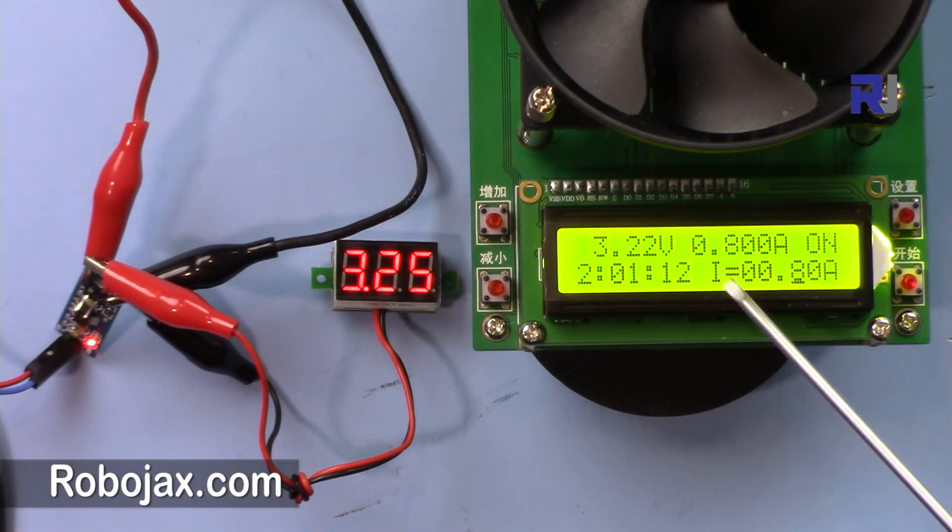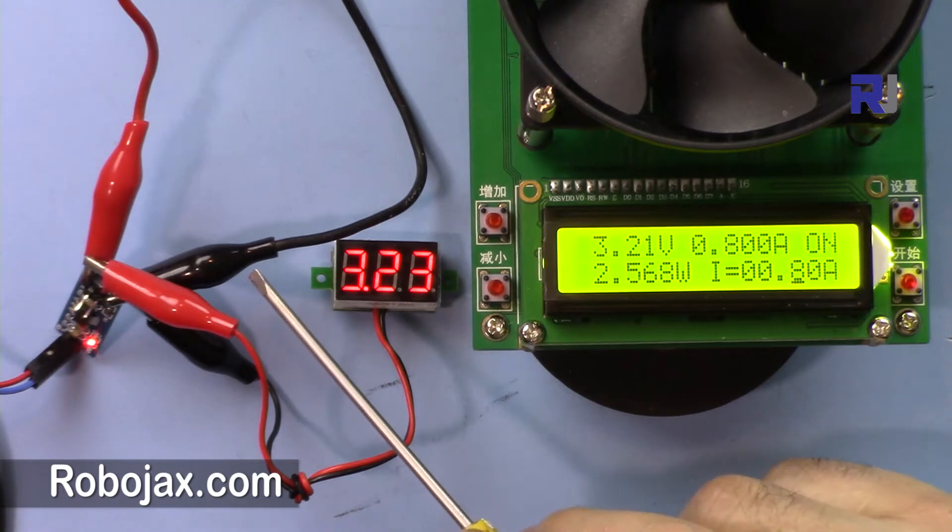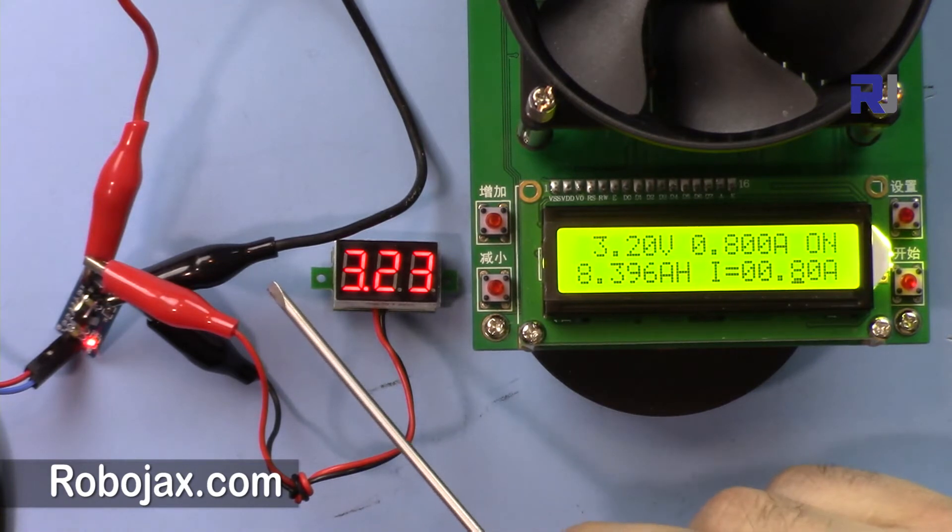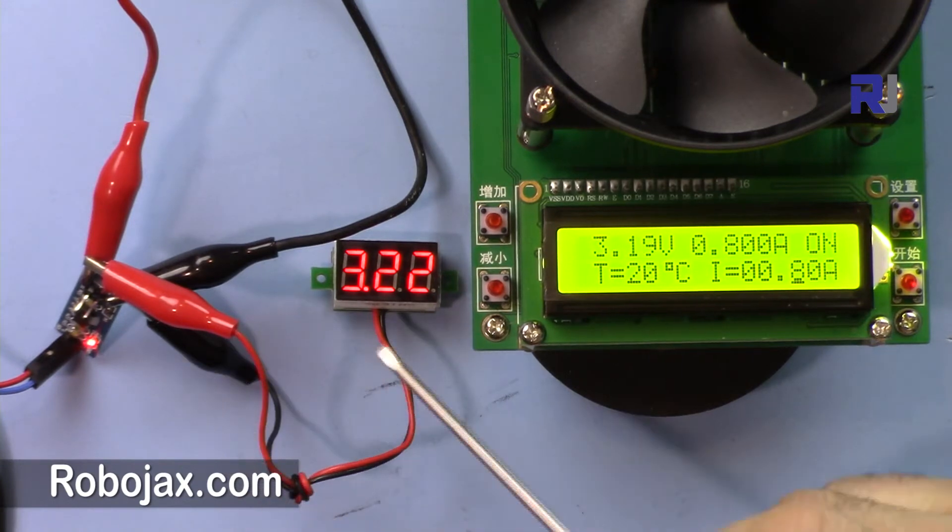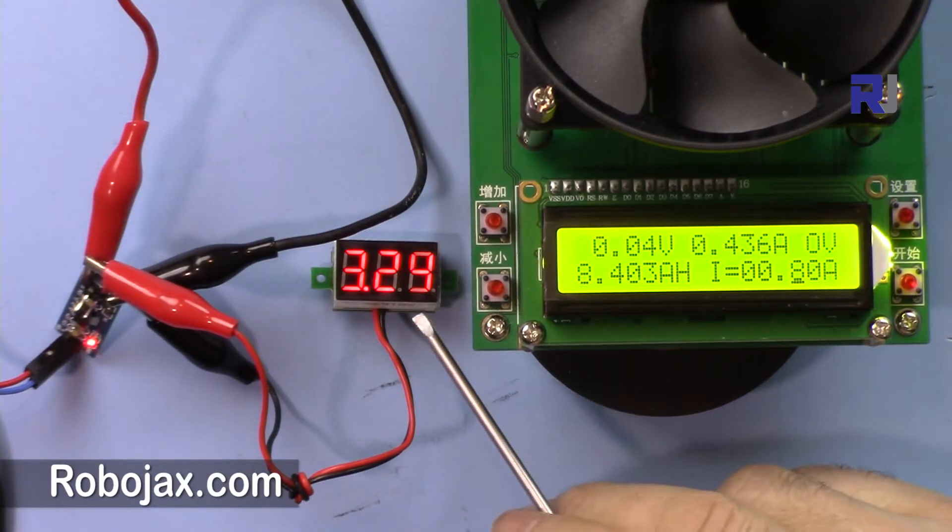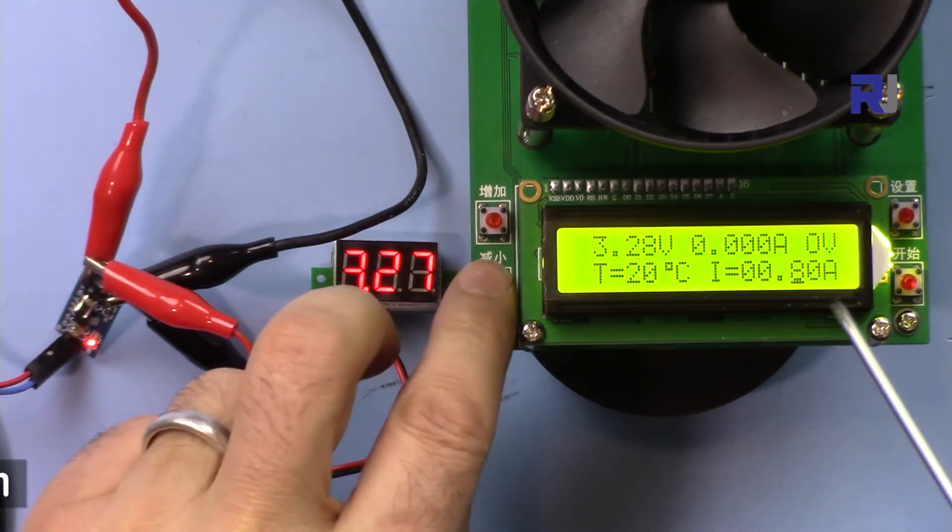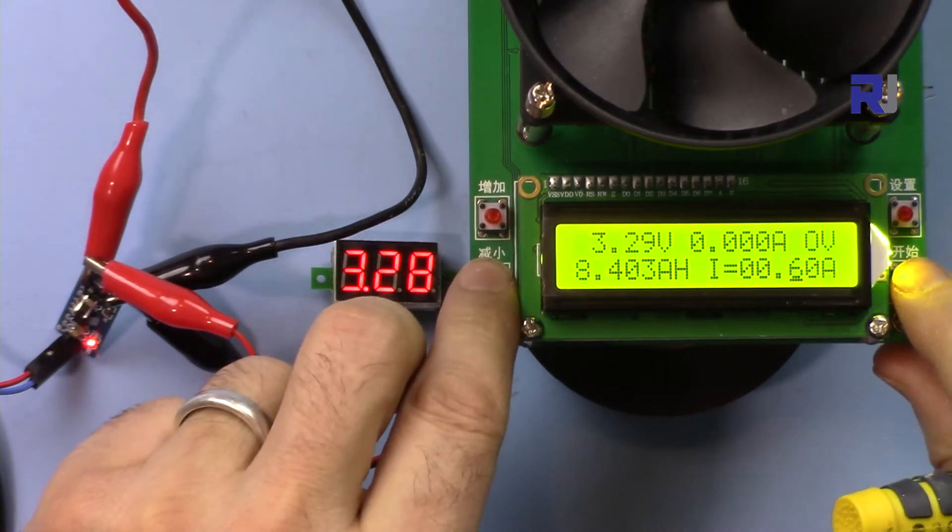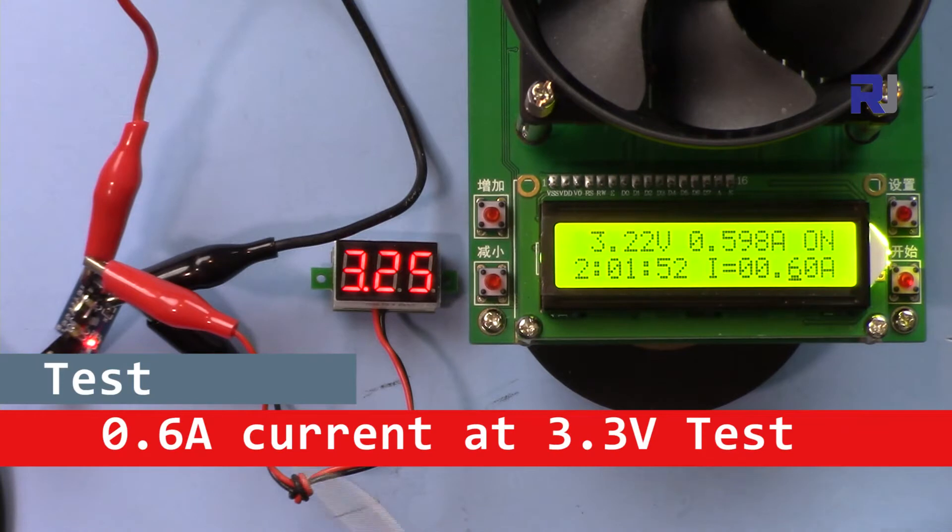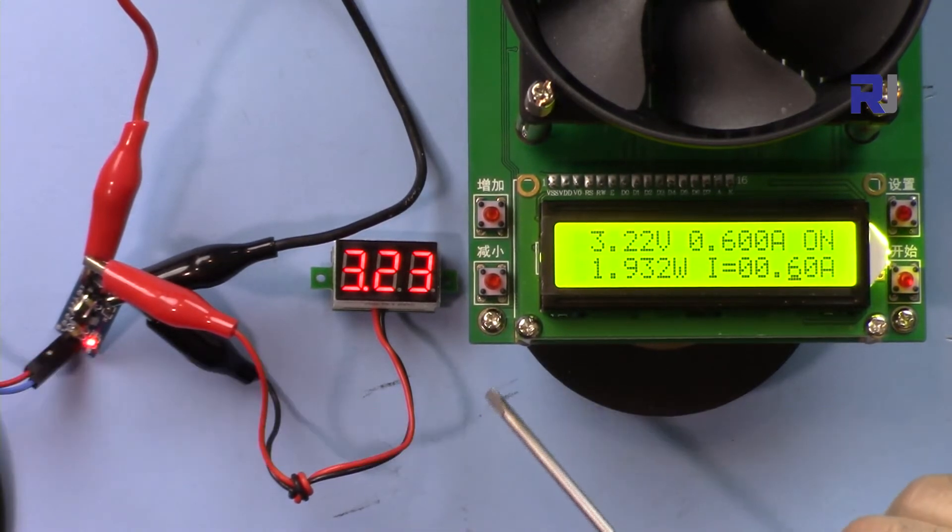So now this is drawing 0.8 and look at the voltage 3.23, some voltage drop. We will see now if it gets hot. So 0.8, no good, not working. Let me go 0.7 or 0.6. I'm gonna jump more.